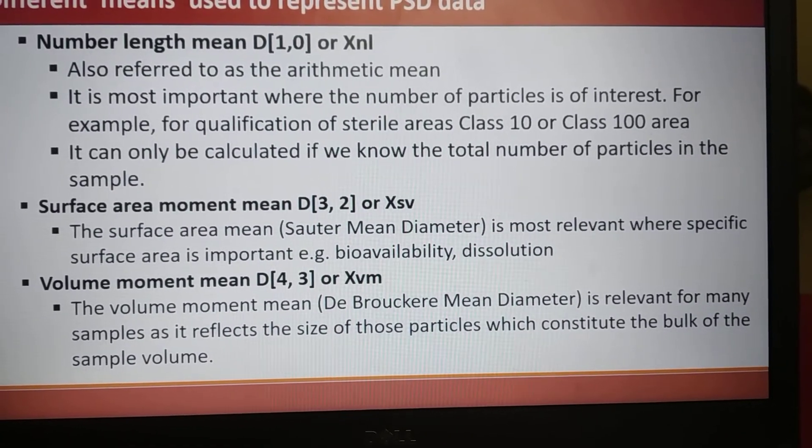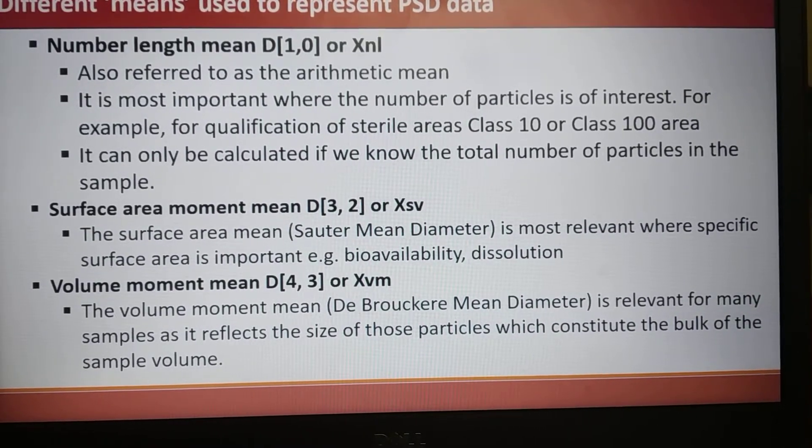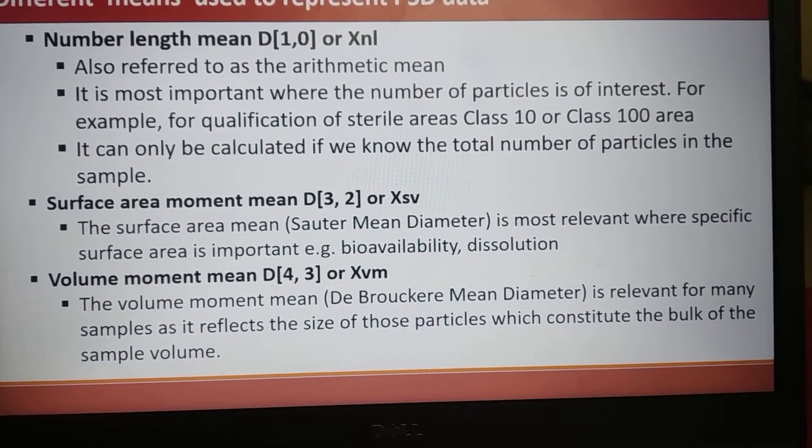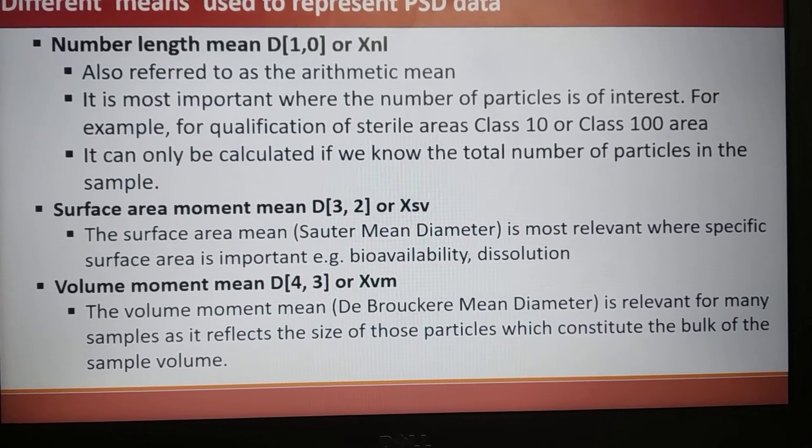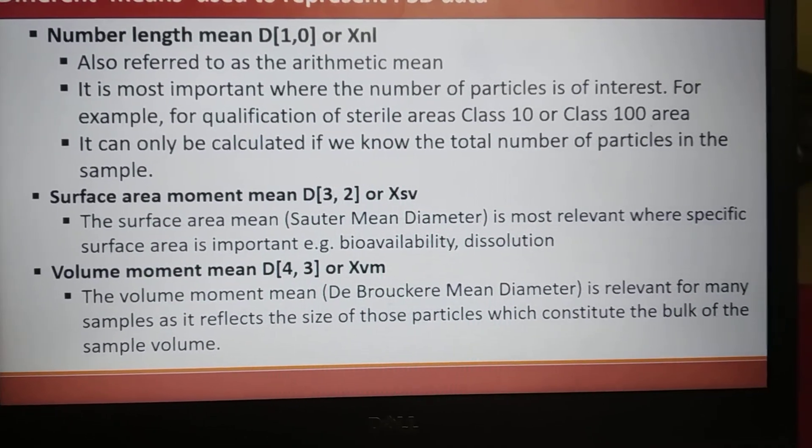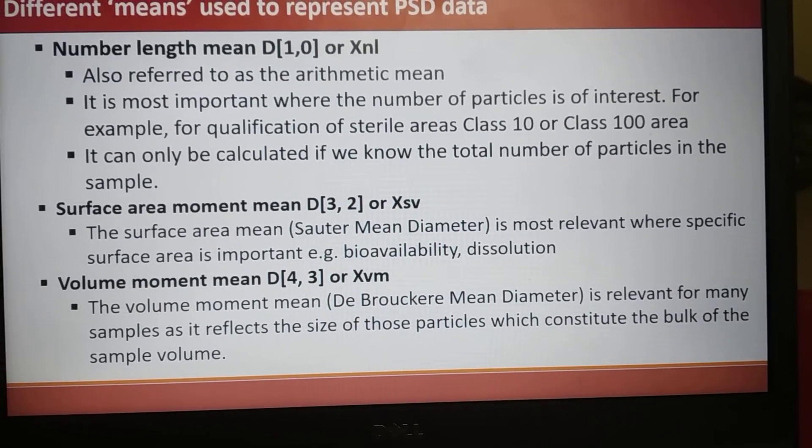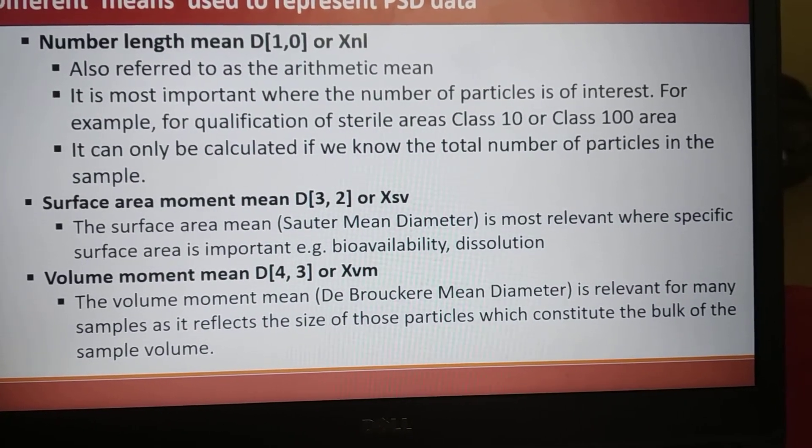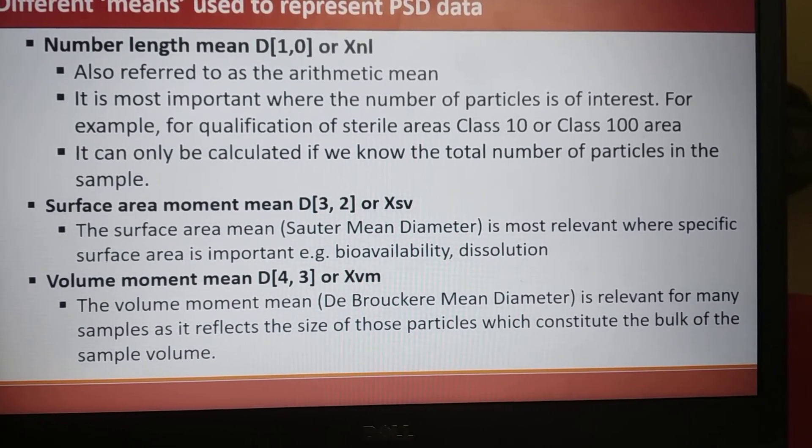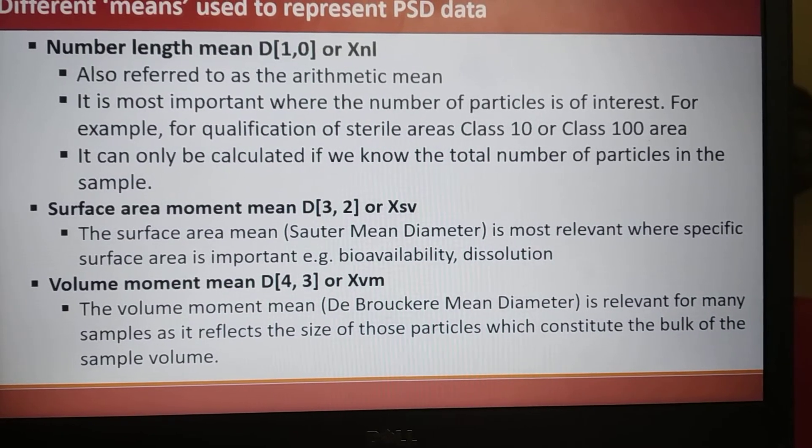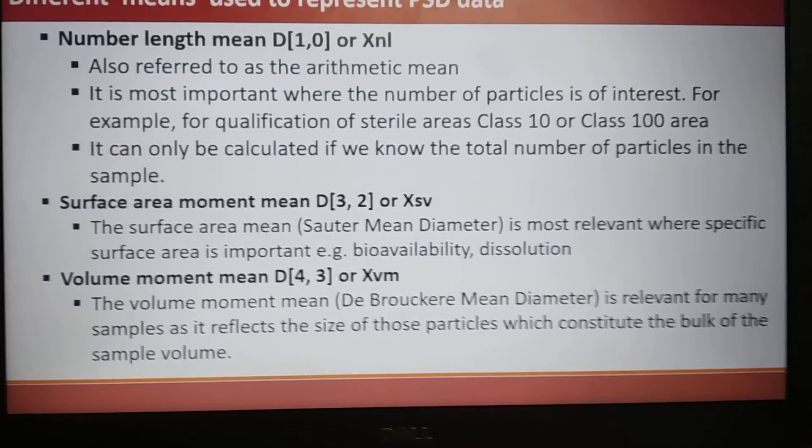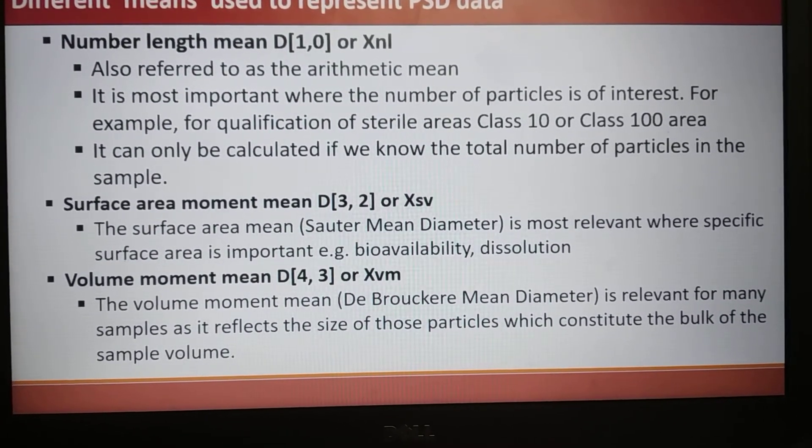The second type of mean is surface area moment mean D[3,2] or Xsv. As it represents, it indicates the equivalent particle of equivalent surface area. It is also called Sauter mean diameter. It is most relevant where specific surface area is important, for example, API having low bioavailability and dissolution concerns. Sauter mean diameter is also referred in US FDA guideline on aseptic processing.